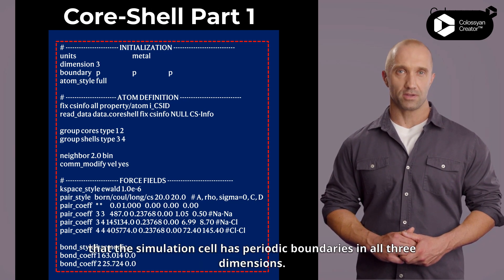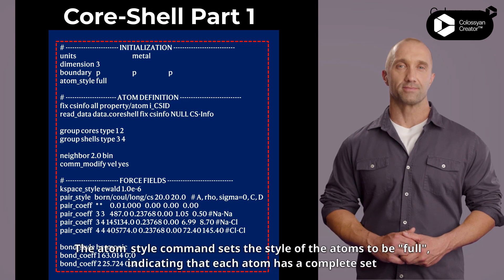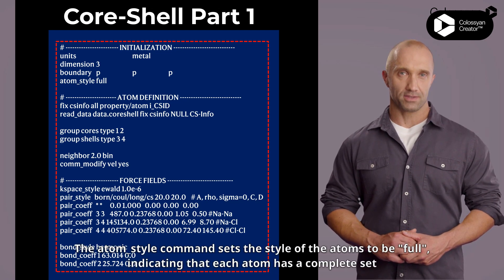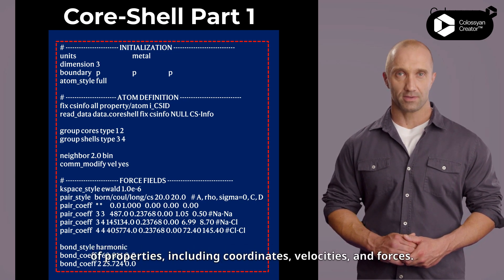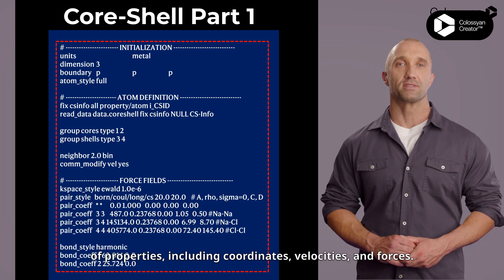The boundary command sets the periodic boundary conditions to PPP, meaning that the simulation cell has periodic boundaries in all 3 dimensions. The atom_style command sets the style of the atoms to be full, indicating that each atom has a complete set of properties, including coordinates, velocities, and forces.